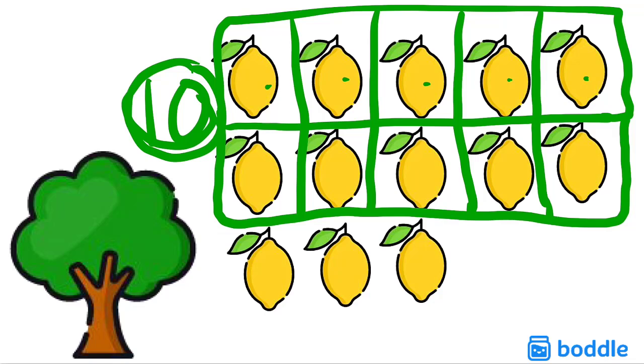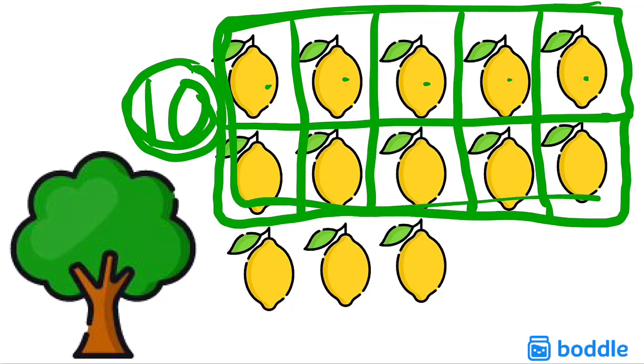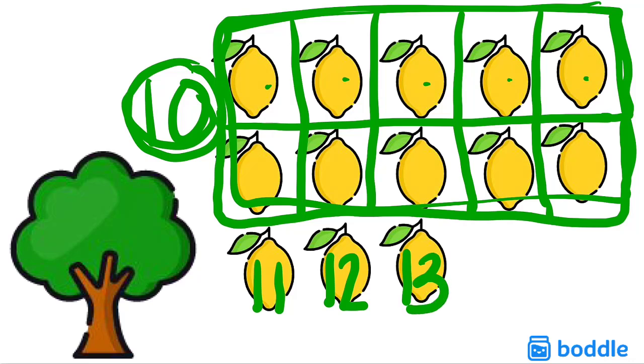Well, I know I have a group of 10 right up top, and I can keep counting on. So again, this lemon makes 11, the next lemon makes 12, and my last lemon makes 13. So how many lemons did I pick from my tree? 13 lemons.